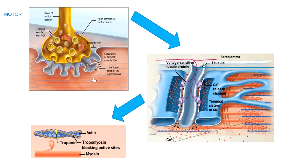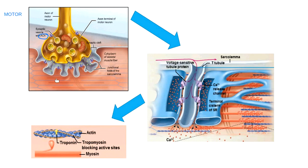We are looking at the axon terminal of a motor neuron talking to muscle tissue. The message for this muscle to contract is sent the same way neurons talk to each other. The action potential moves down the neuron, gets to the axon terminal, and spits out neurotransmitters. The neurotransmitter here is acetylcholine — the only message that a neuron can give to a muscle cell.